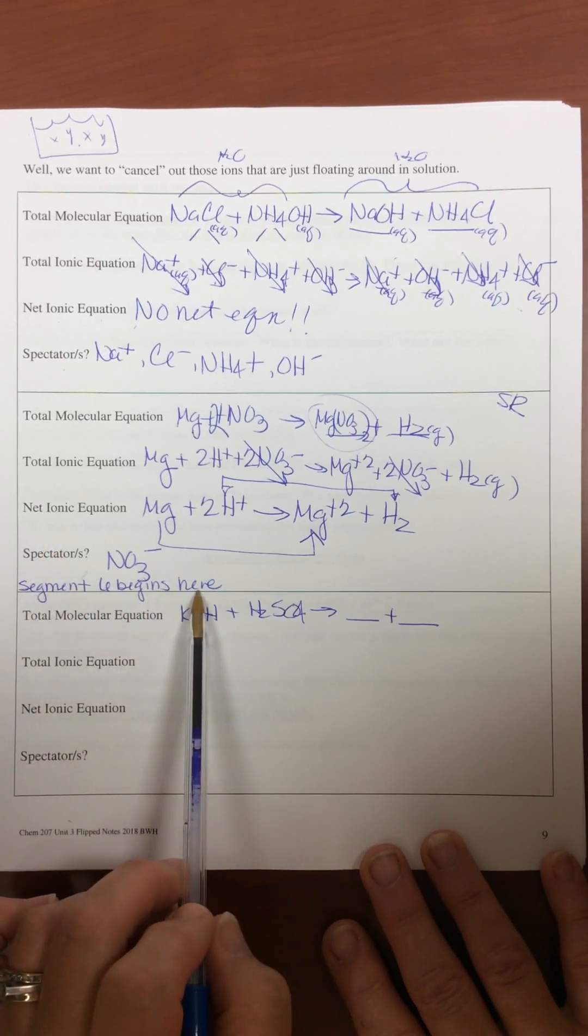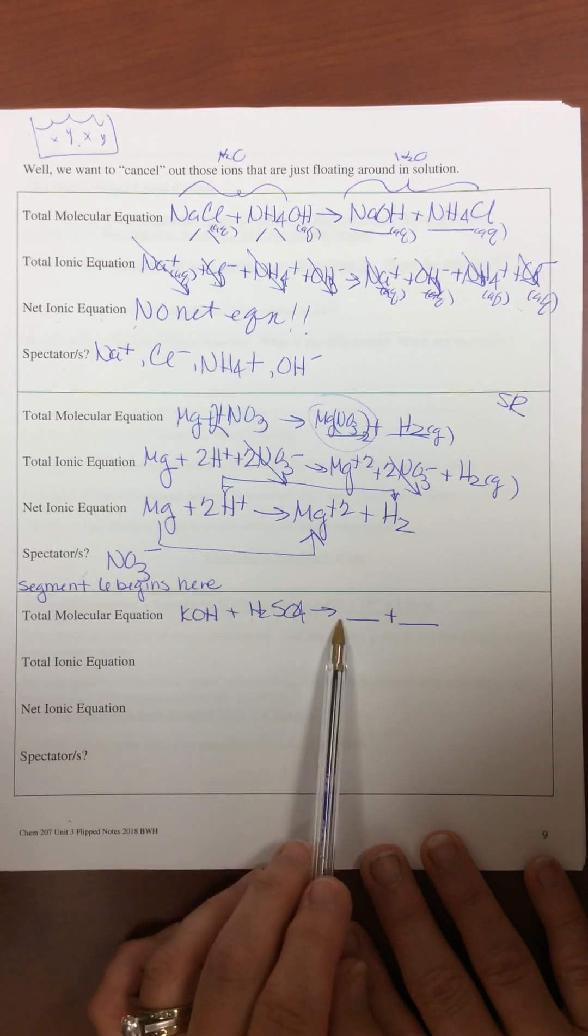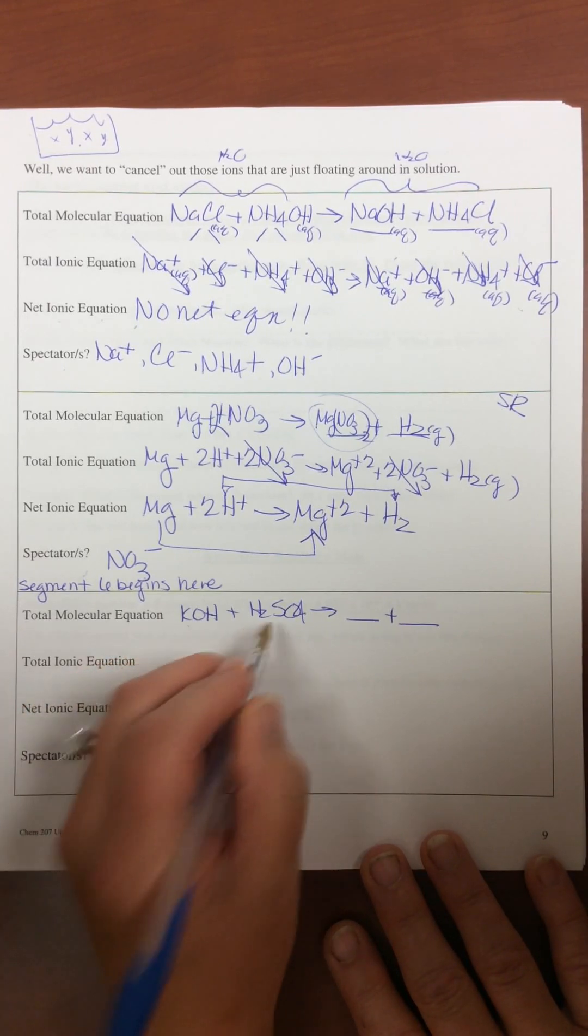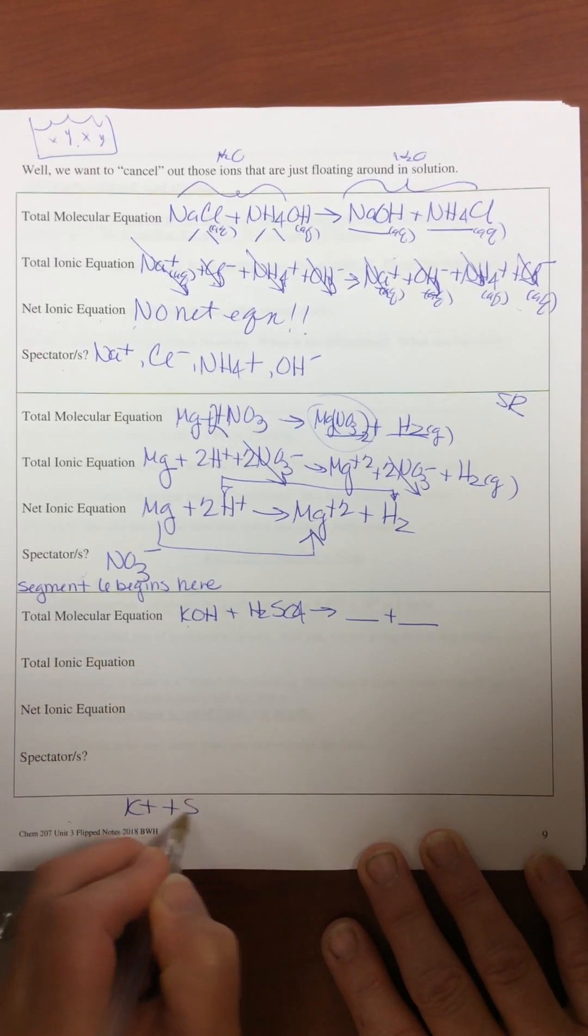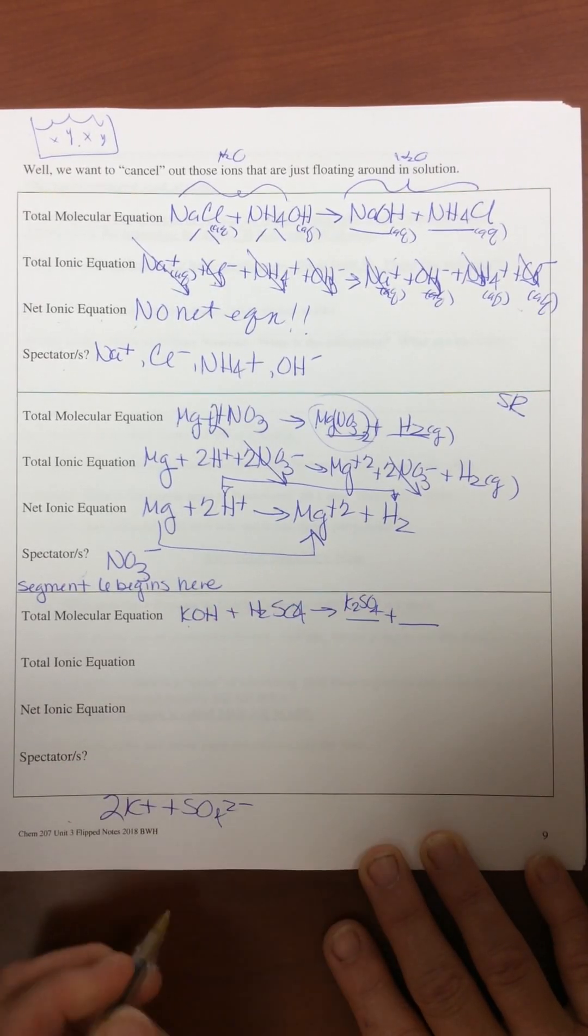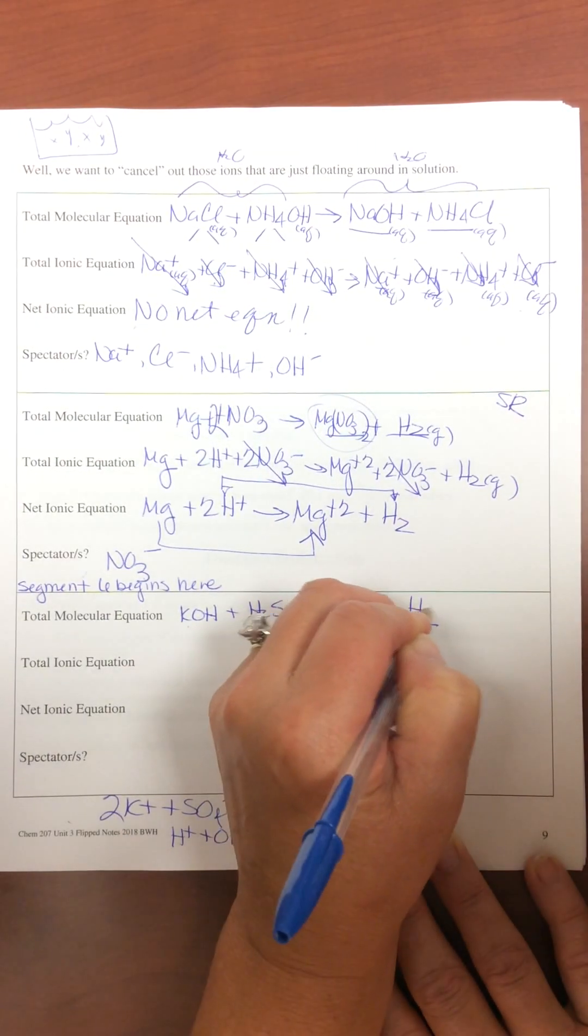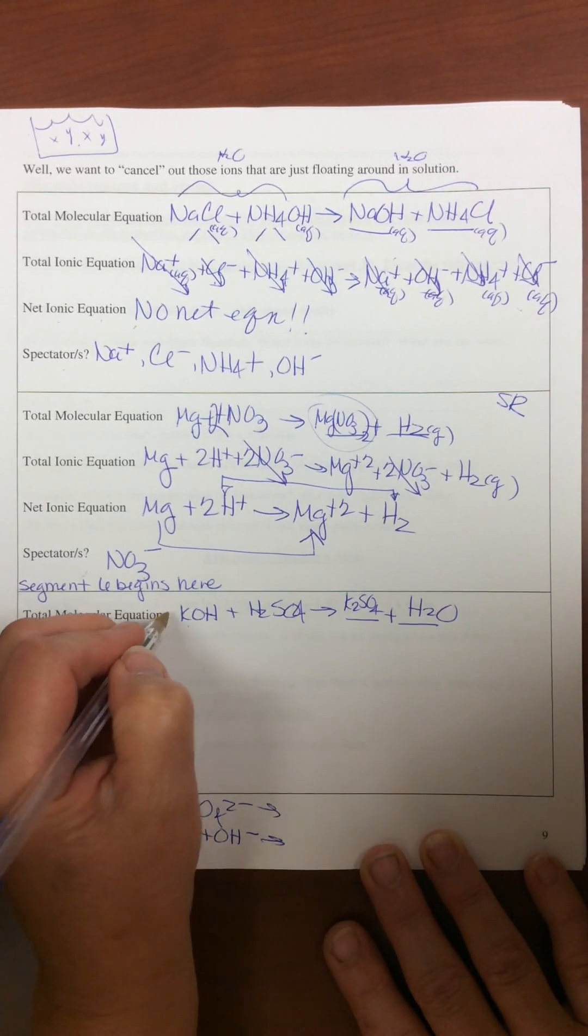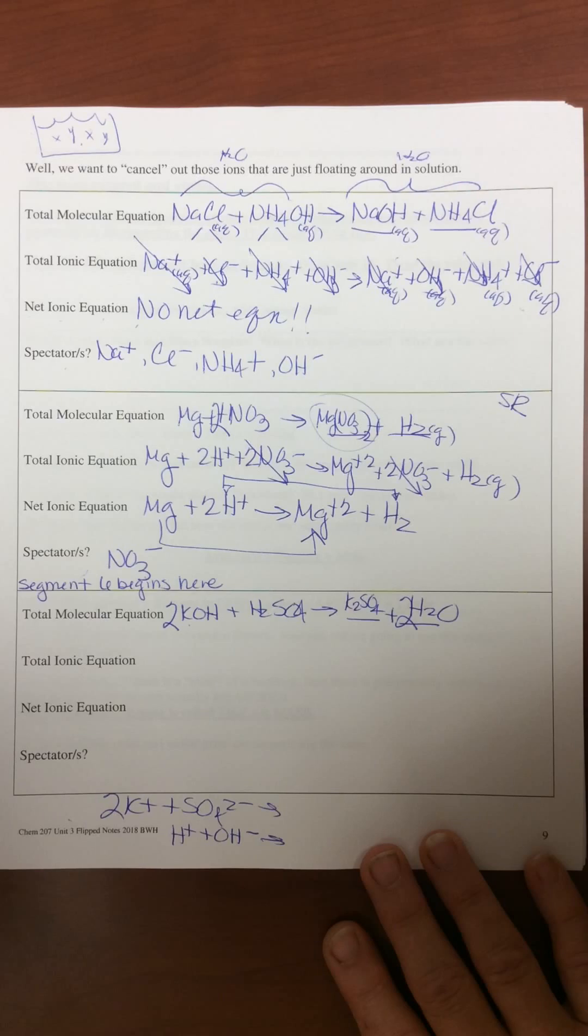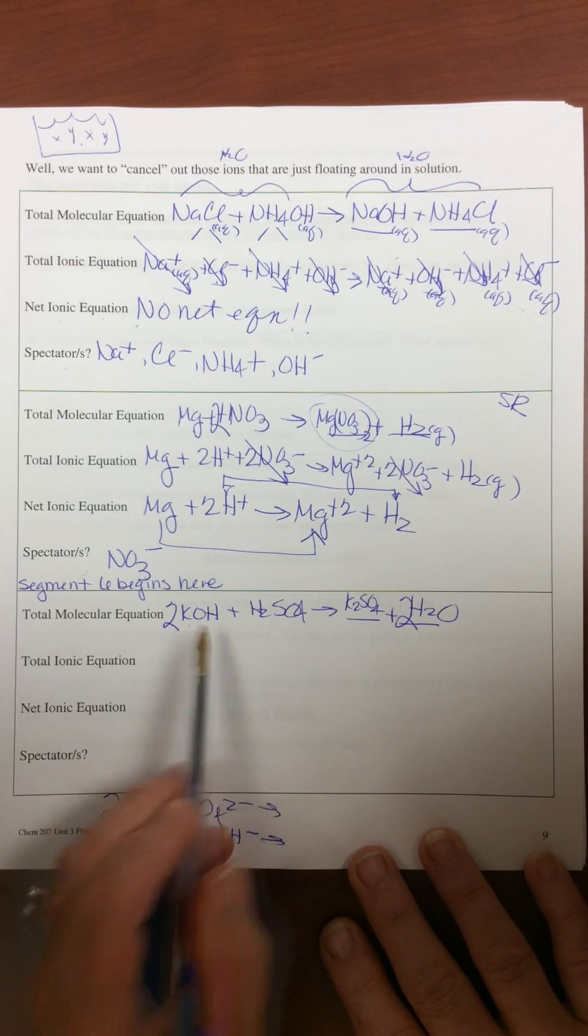Section 6 begins with the last one on page 9 which I filled in for you. KOH plus H2SO4. K plus SO4 2 minus means that K2SO4 is a product. H plus OH minus means that water is a product. Balance it and then you're ready to move forward.